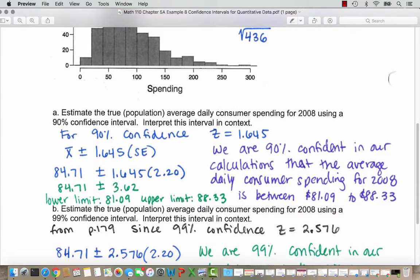Part A asks us to estimate the true population average daily consumer spending for 2008 using a 90% confidence interval and to interpret this interval in context. So for the 90% confidence level, our critical value Z is 1.645. Our interval is going to be constructed by taking our sample mean x-bar and adding and subtracting 1.645 times the standard error.